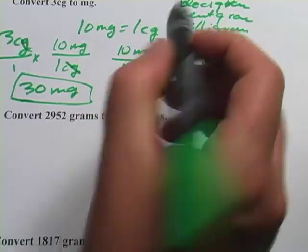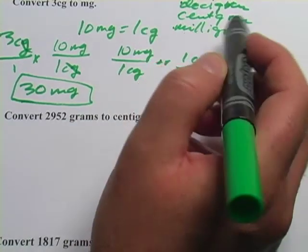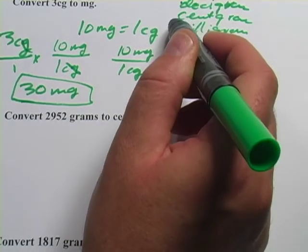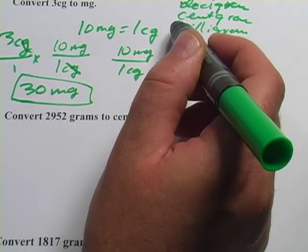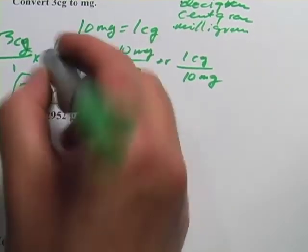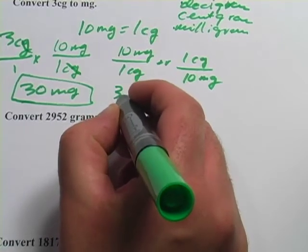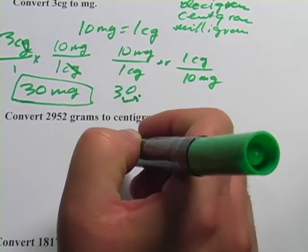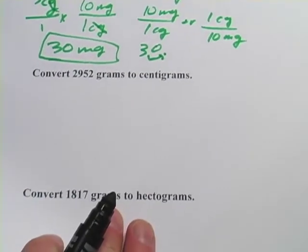Now this time, we went from centigrams down to milligrams. So we moved that decimal point one place, we started with 3, and we moved it one place that way, we got 30. Alright, let's do another one here.